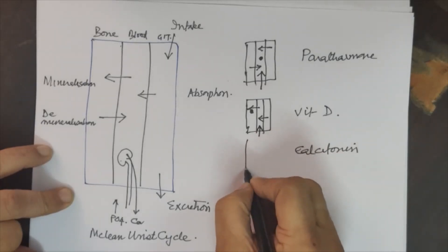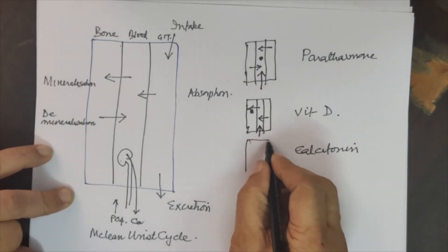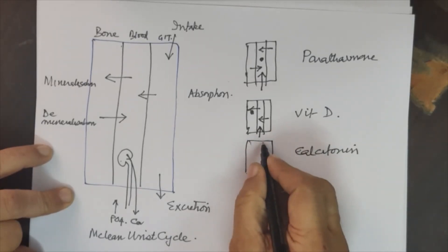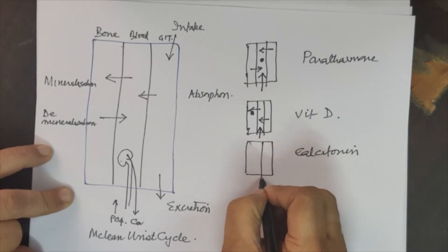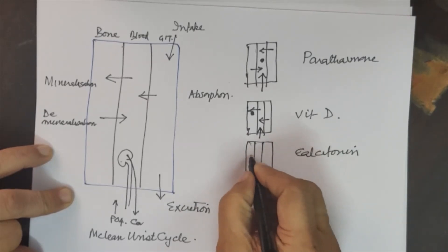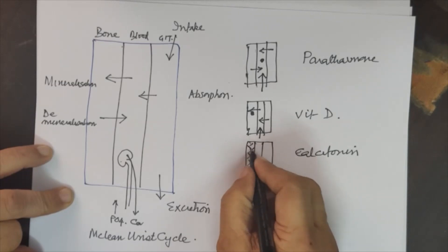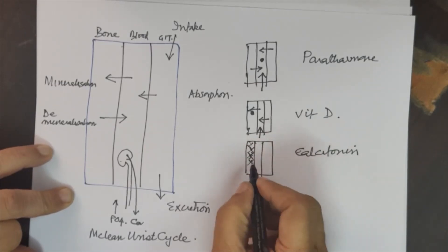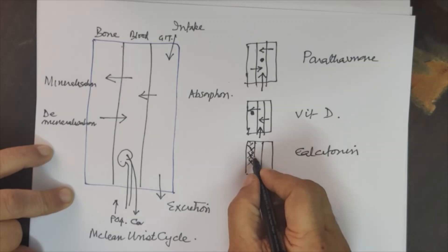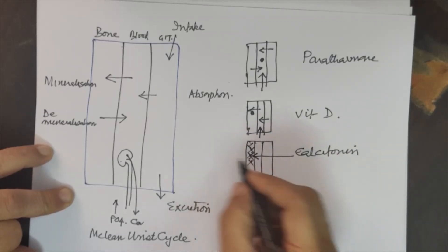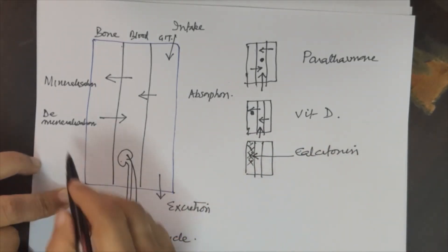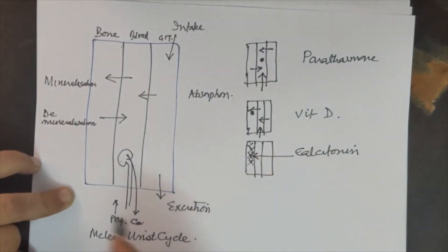The third regulator is calcitonin. Calcitonin is responsible for laying down the fabric in which calcium is deposited. So these are the regulators of calcium metabolism.